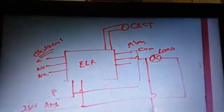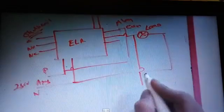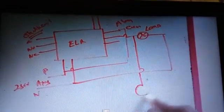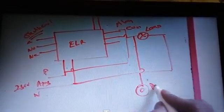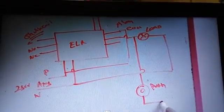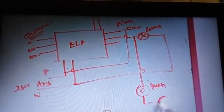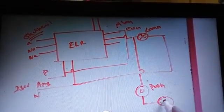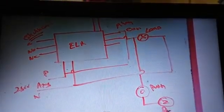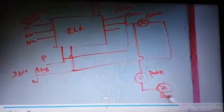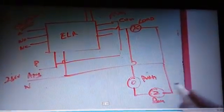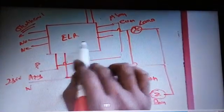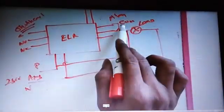We are giving phase supply for the indication lamp and taking output from the normally-open contact for the indication lamp. Another one is looped for the push button. After the push button we are giving to the buzzer, and we are looped to neutral also. This is the general connection of the ELR.